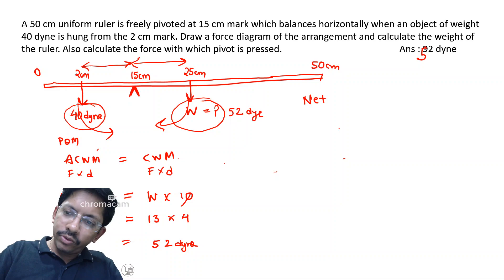It is equal to 40 plus 52 is equal to 92 dyne. Thank you.